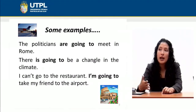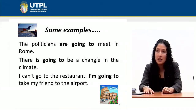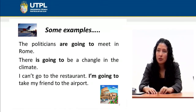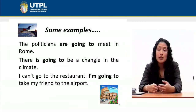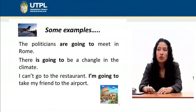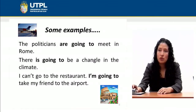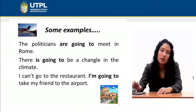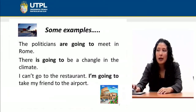'The politicians are going to meet in Rome' — it means that in the future, maybe in one or two weeks, they are going to have a meeting there. 'There is going to be a change in the climate' — maybe because you have reviewed information and you have a prediction for the future. 'I can't go to the restaurant; I'm going to take my friend to the airport' — this is something you know you are going to do.